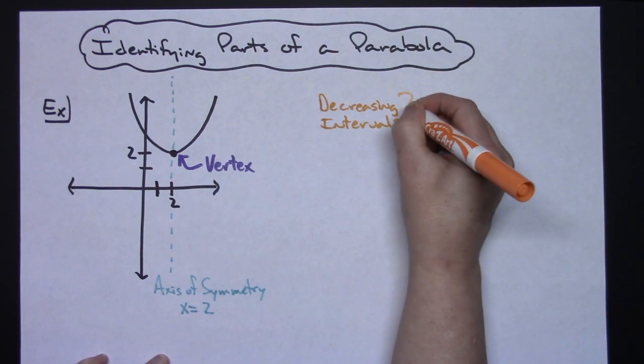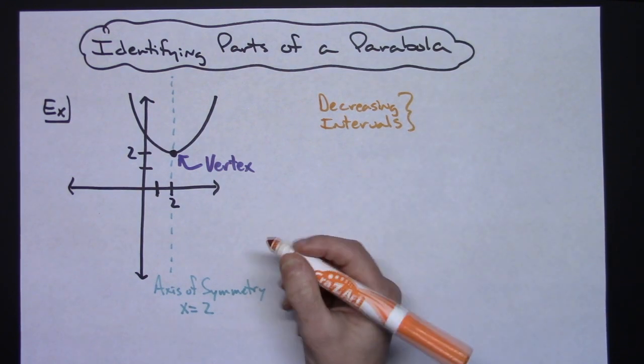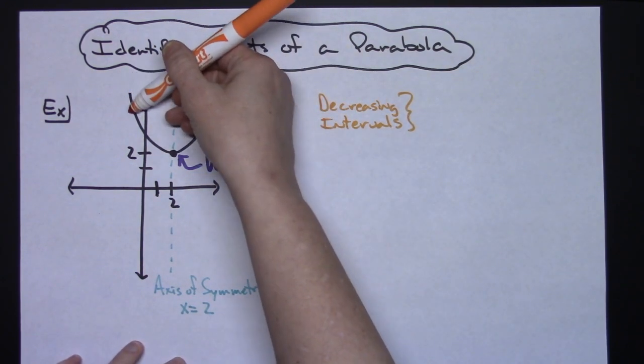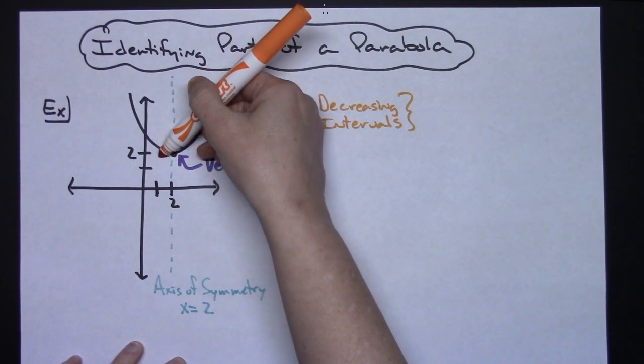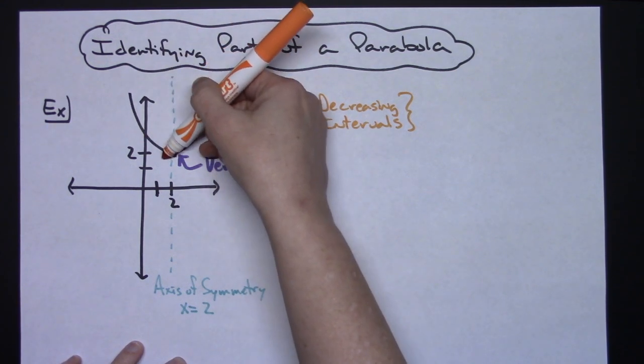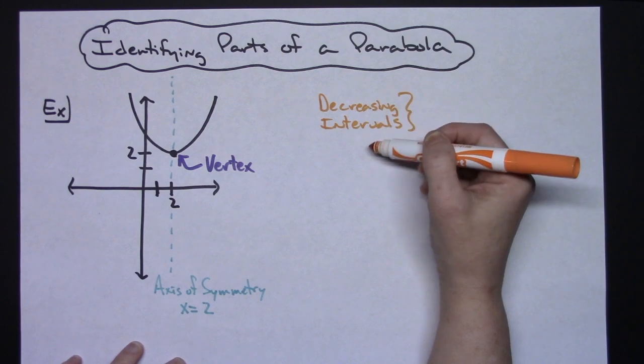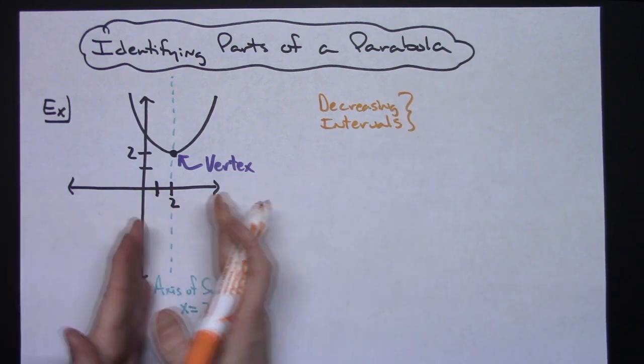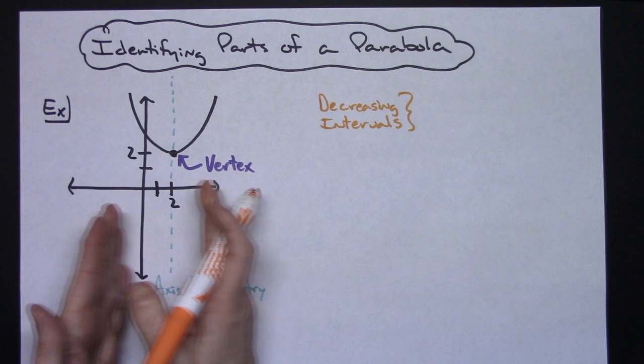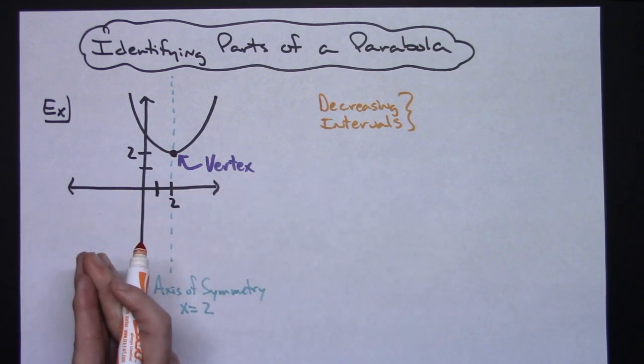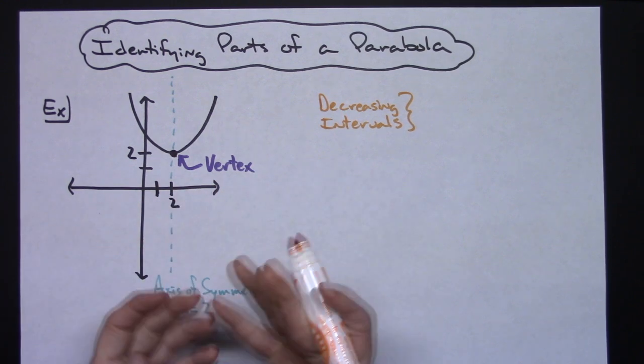Decreasing intervals—well, where is the function decreasing? It's going to be decreasing as we draw the parabola this way. Intervals are always in terms of our x variables along the x-axis. This is where we're going to get it, and intervals for the most part in my class we always just use open curvy brackets.